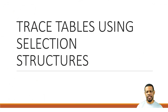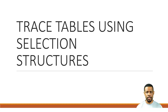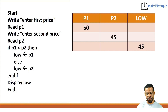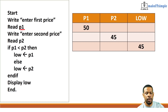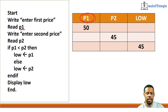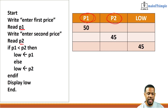What will most likely happen is something like this: a trace table using selection control structures. Selection means that you have to make a choice. For this algorithm, we have variables p1 and p2. You have to make sure those variables are accounted for. The only other variable we have is 'low,' so we must account for that too.